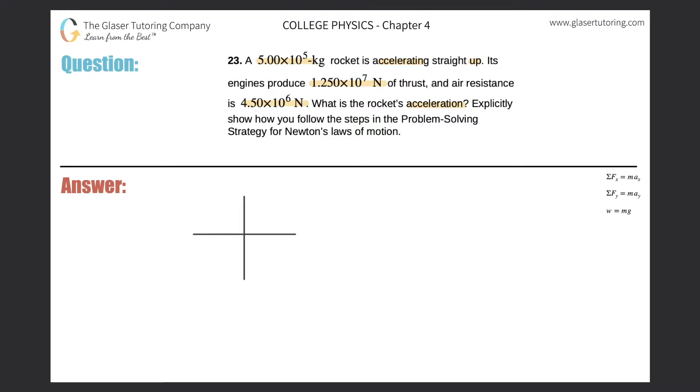A couple things are fairly straightforward. They tell us that the engines produce 1.25 times 10 to the 7 newtons of thrust. If you're thinking about a little spaceship here, the thrust would point up because it has to apply a force in the positive y direction to get it off the earth. So I'm going to draw one of those vectors right here. This is the thrust, I'll call it T. Sometimes T represents tension, but in this problem it'll be thrust, so 1.25 times 10 to the 7 newtons.